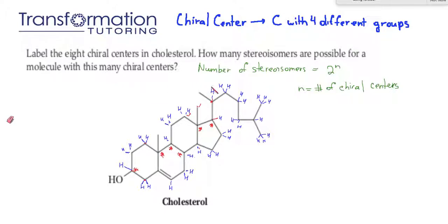We see that this carbon also has one hydrogen. It is connected to the carbon on the left, on the right, and on the bottom. On the left, the carbon is definitely different from the rest because it's only connected to hydrogens — it's not connected to any more carbons. On the bottom, this carbon is connected to two carbons, while on the right this carbon is only connected to one carbon. Therefore this is also a chiral center.